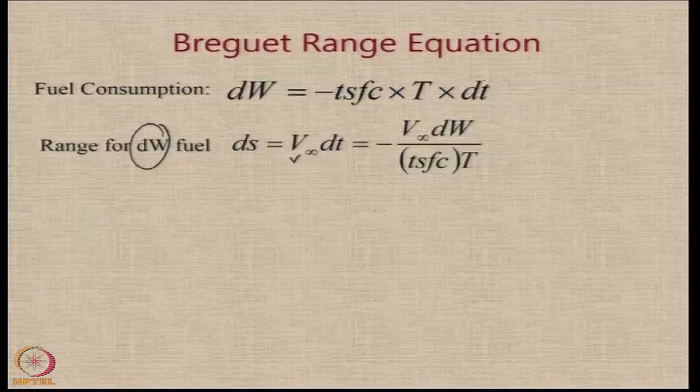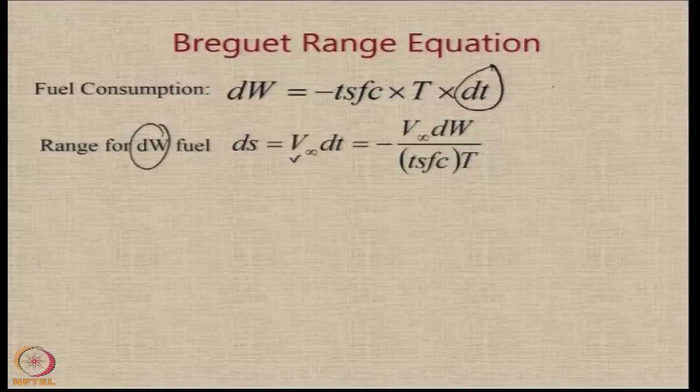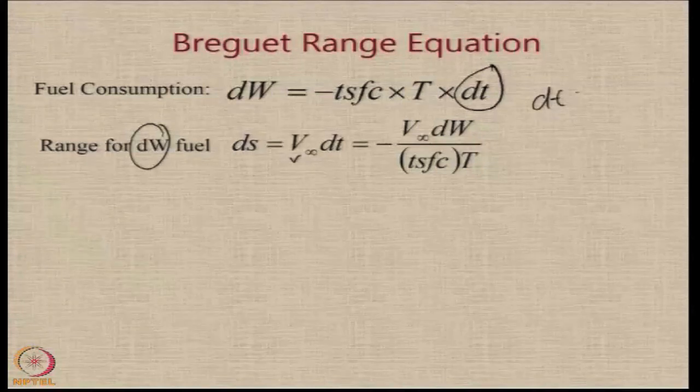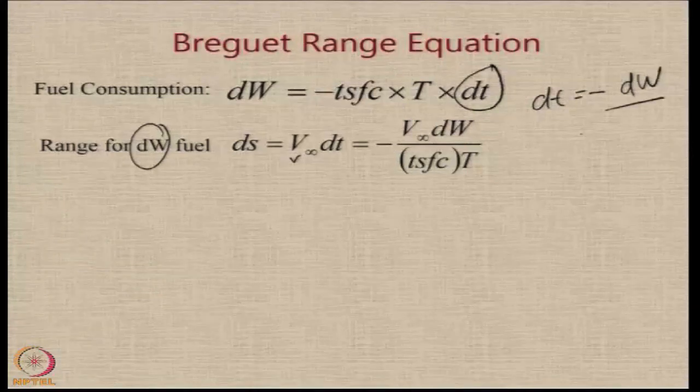So, therefore, if I just leave DT here and if I take these 2 parameters that side, I get DT is equal to minus of DW by TSFC into T.